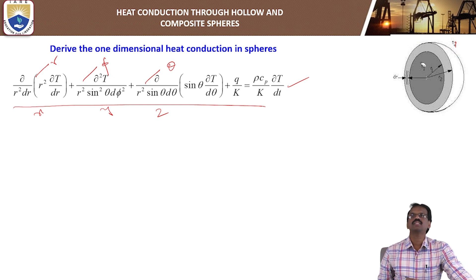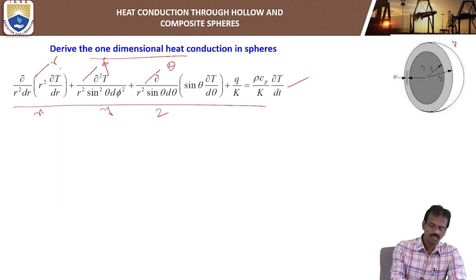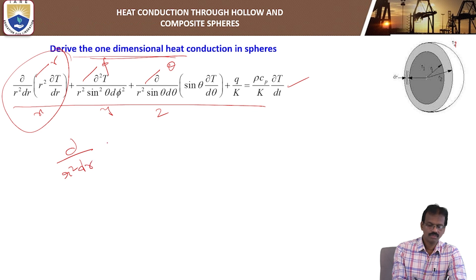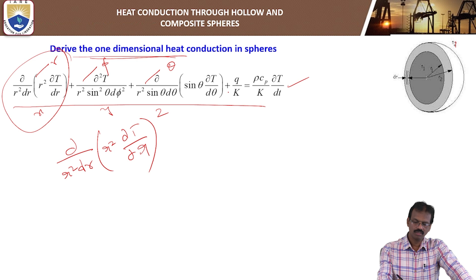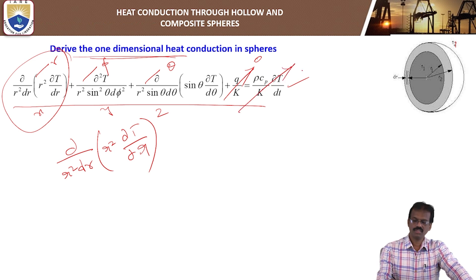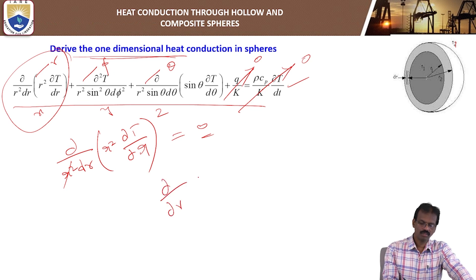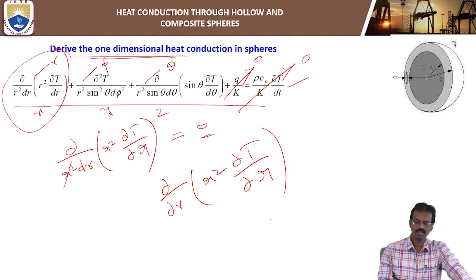For one-dimensional heat conduction, we take only the r-direction. We consider only the term (d/dr)(r² dT/dr). Neglecting internal energy generation gives zero on the right side, and for steady-state conditions dT/dt = 0. So the equation simplifies to (d/dr)(r² dT/dr) = 0.